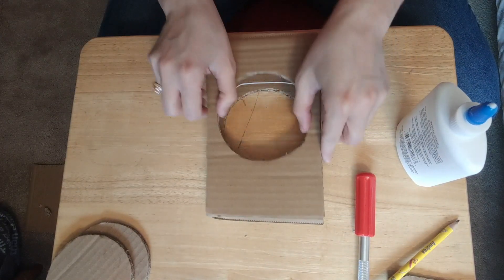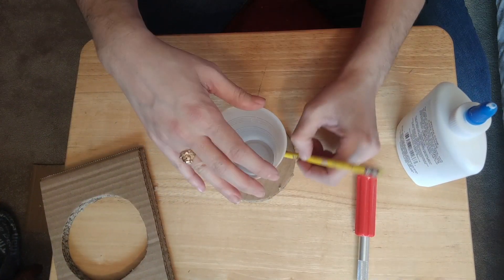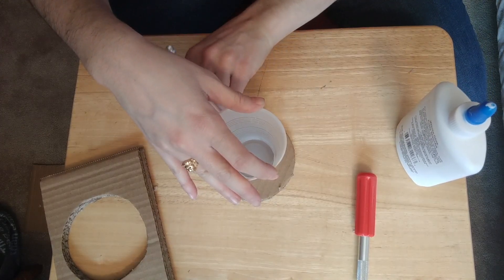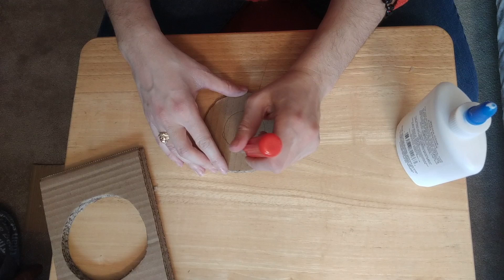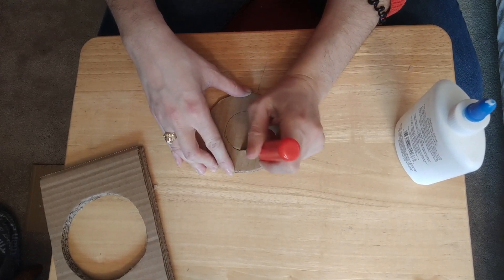To cut out our smaller circle, I'm just gonna trace the smaller bottom edge of a cup. I'm gonna carefully cut it out, except rather than keeping the outside, I'm keeping the centerpiece.